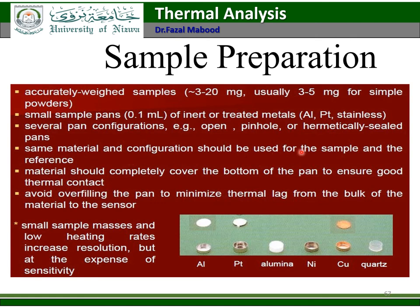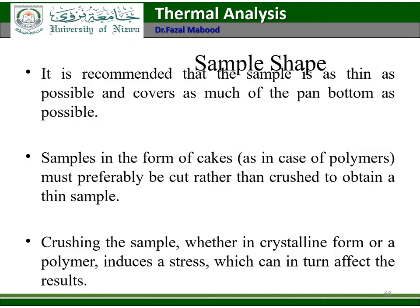The same material and configuration should be used for the sample and the reference. Material should completely cover the bottom of the pan to ensure good thermal contact. Avoid overfilling the pan to minimize thermal lag from the bulk of the material to the sensor. Small sample masses and low heating rates increase resolution but at the expense of sensitivity. It is recommended that the sample is as thin as possible and covers as much of the pan bottom as possible.